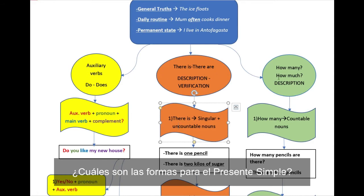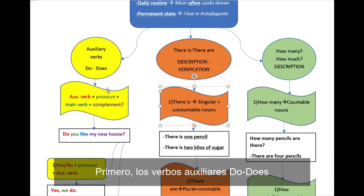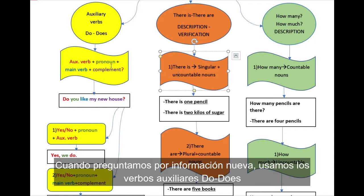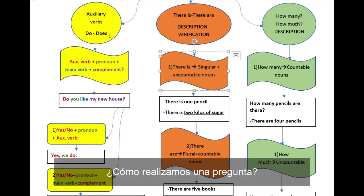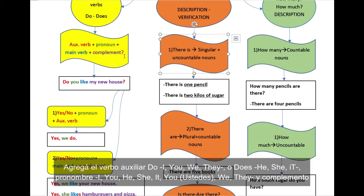What are the forms for simple present? First, auxiliary verbs do and does. When we ask for information, new information, we use auxiliary verbs do and does. How do we ask a question? Add, at first, auxiliary verb do or does, depending. Does is for he, she, it. Do is for I, you, we, and they. Auxiliary verb, pronoun, main verb, which is the action, and the complement, plus the question mark.